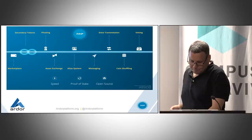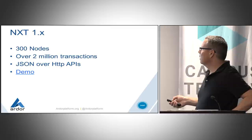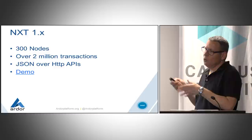To summarize what we have right now in NXT 1.x: we have about 300 public nodes, over 2 million transactions executed, and a very simple JSON over HTTP API that anyone can use without permission from anyone to build decentralized applications.